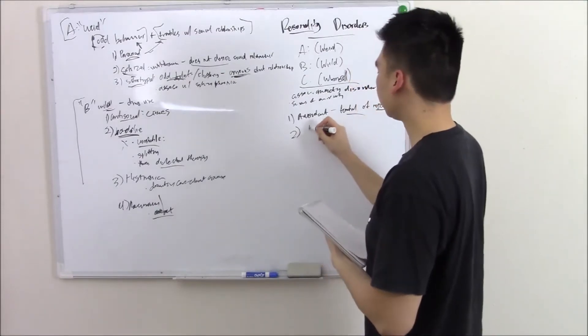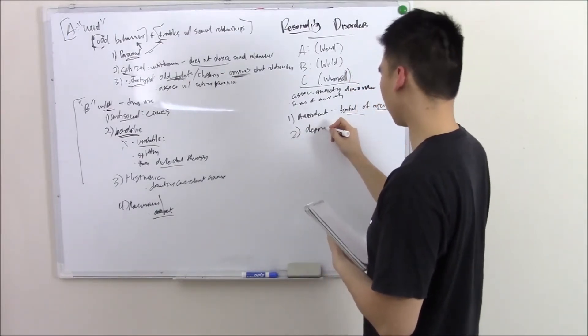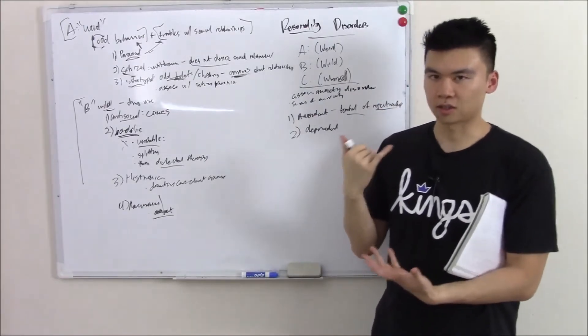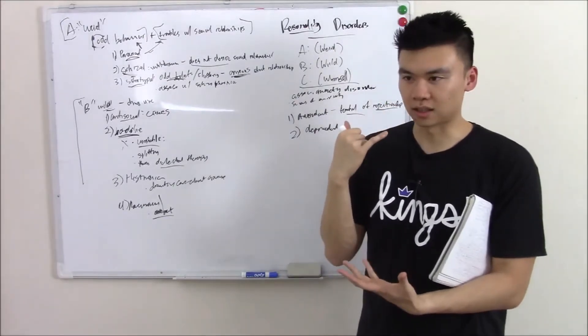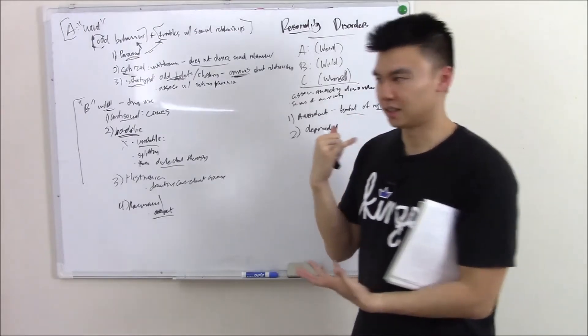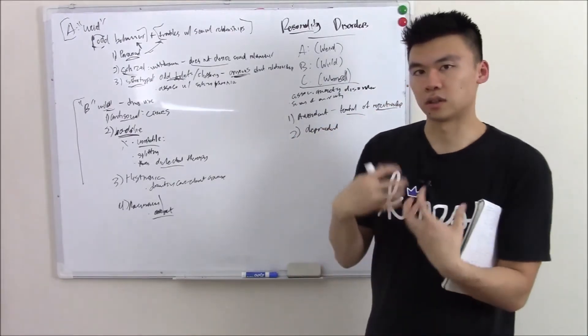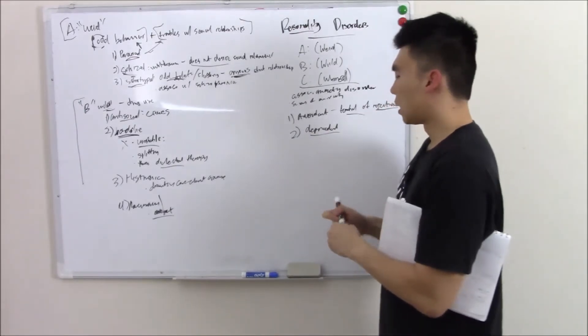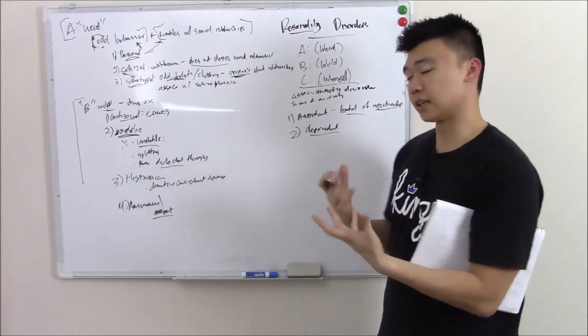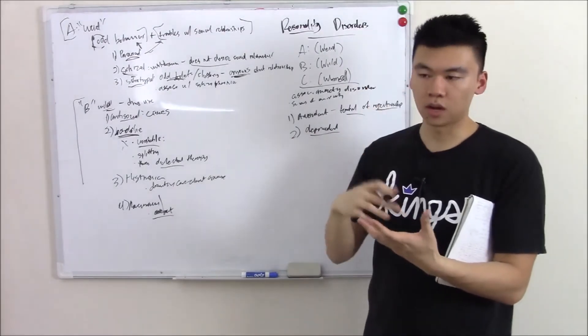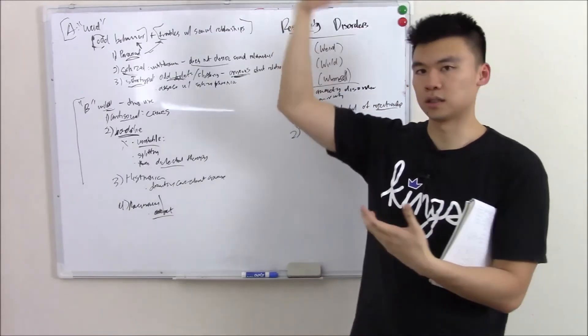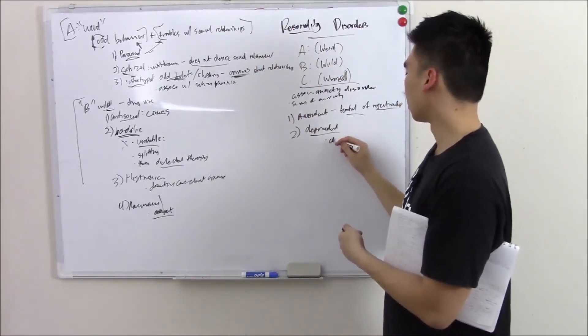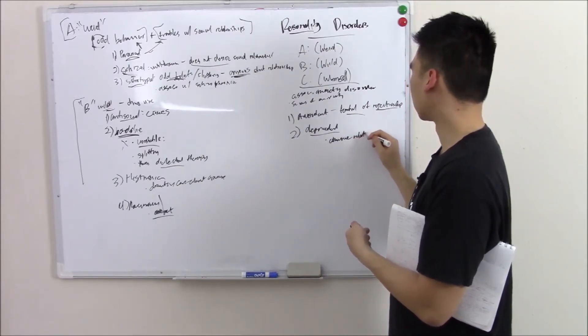Next up, dependent. Dependent is someone that's dependent on another. So they might call and say, hey, I'm going to get some groceries. Is that all right? And call there and say, hey, Ralph's is closed. Can I go to Albertsons? Is that all right? And they basically need the reassurance of their partner for everything. They're very dependent and they're very submissive and very lacking in their self-confidence. And unfortunately, these people often find themselves in abusive relationships where their partner is very dominating, very abusive. So know this is associated with abusive relationships. Classically seen.